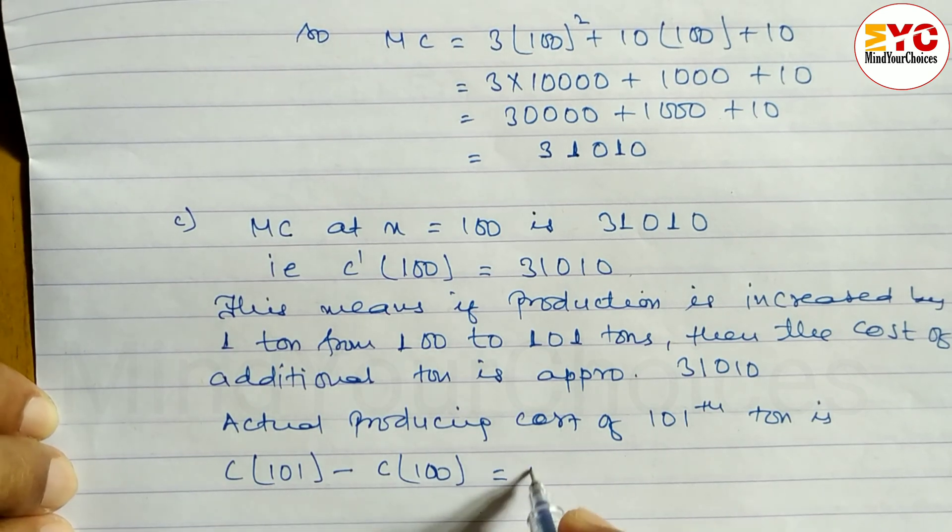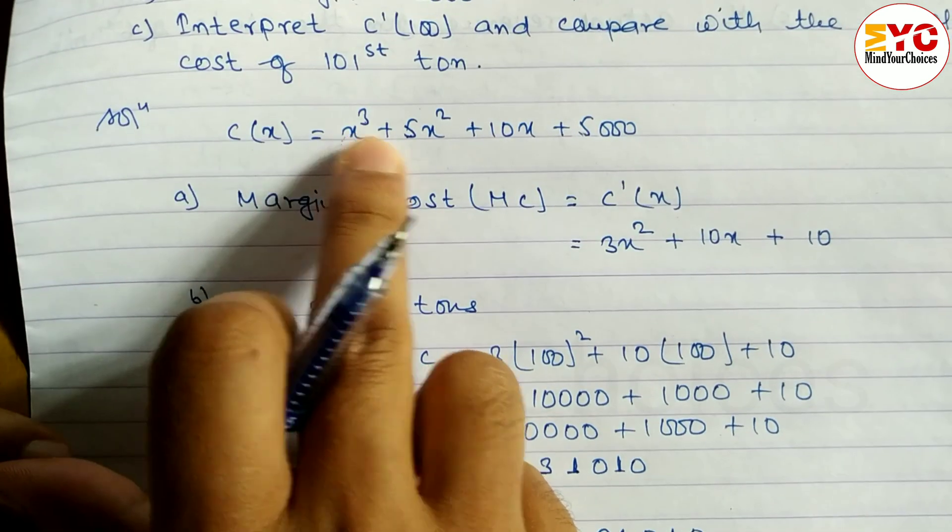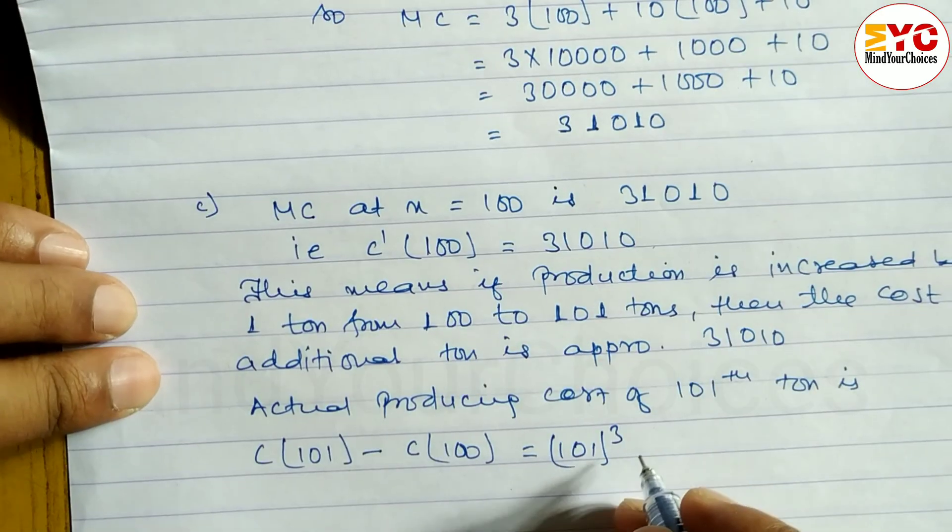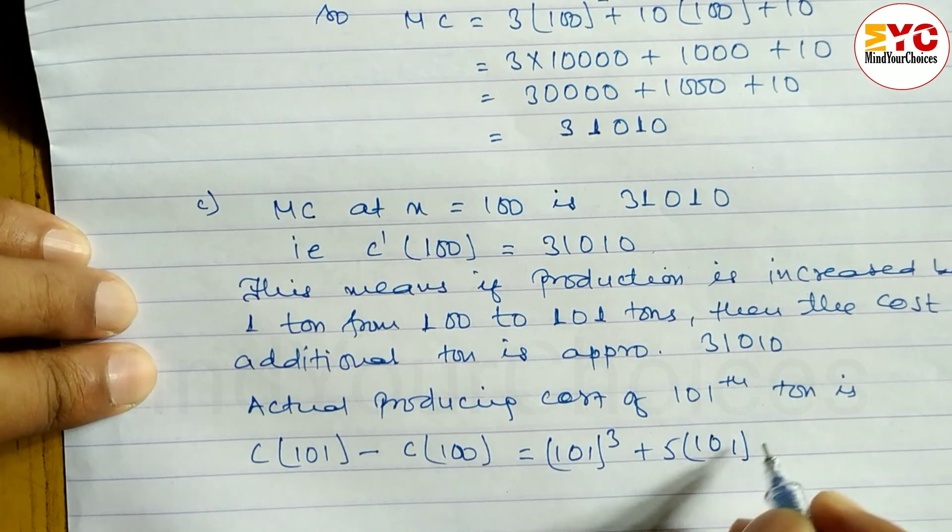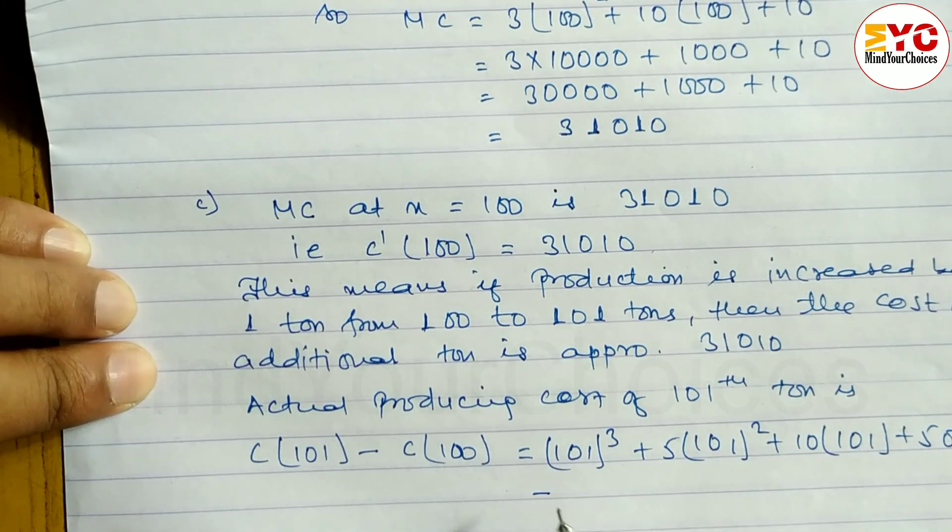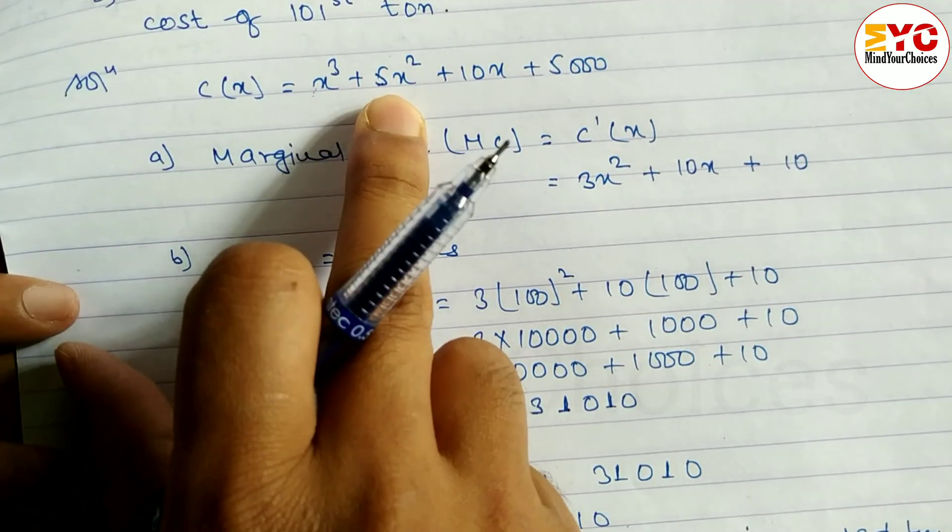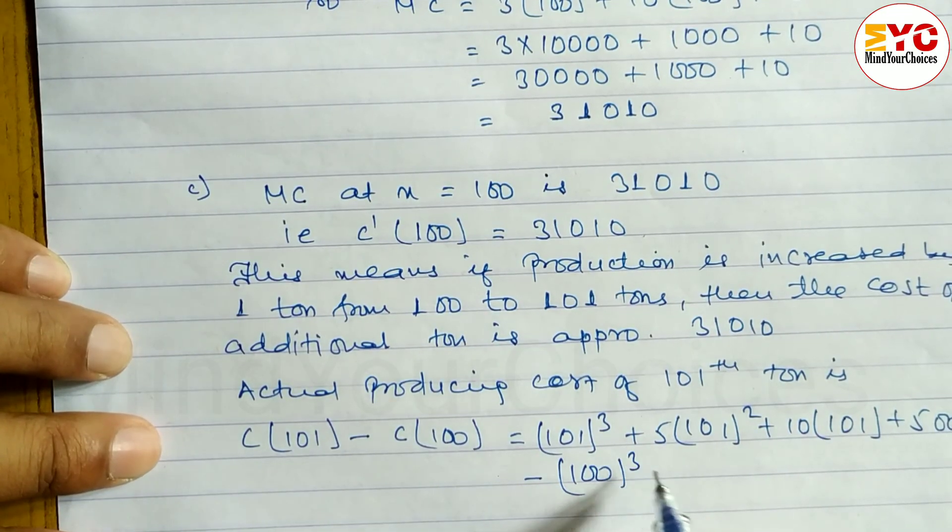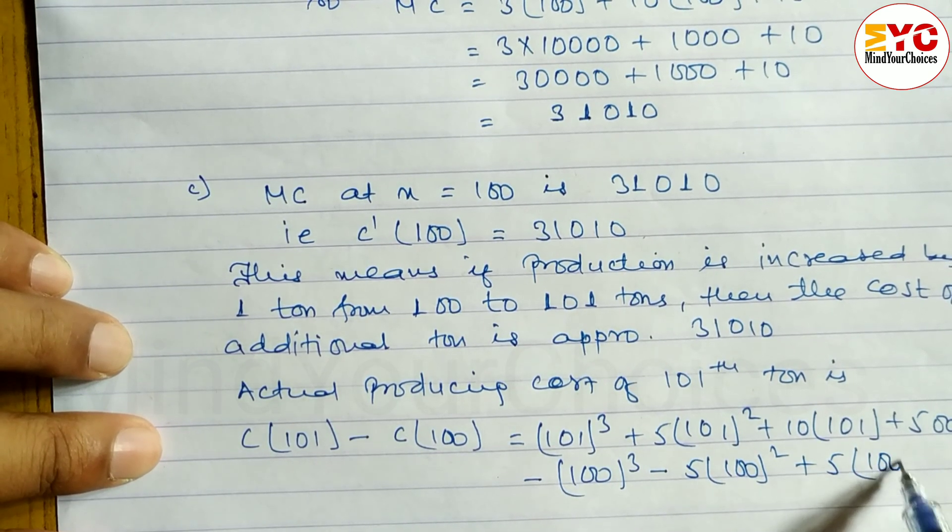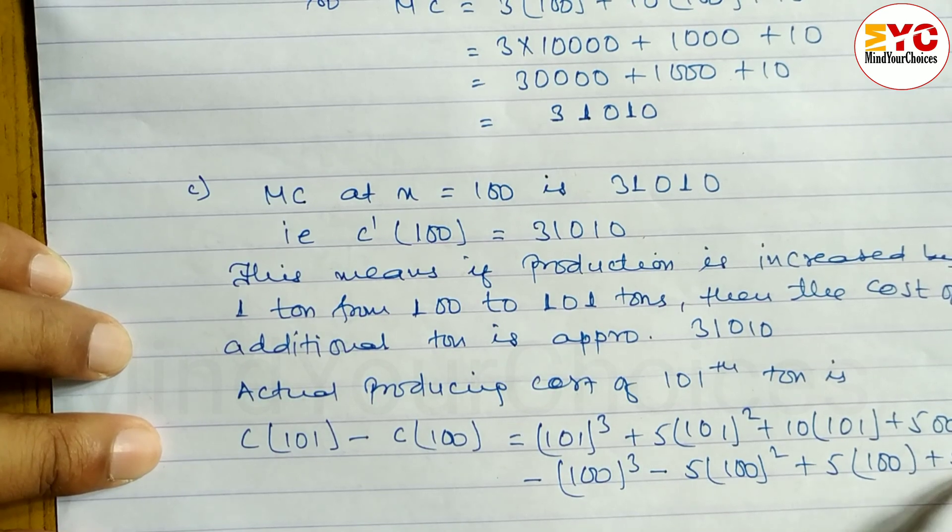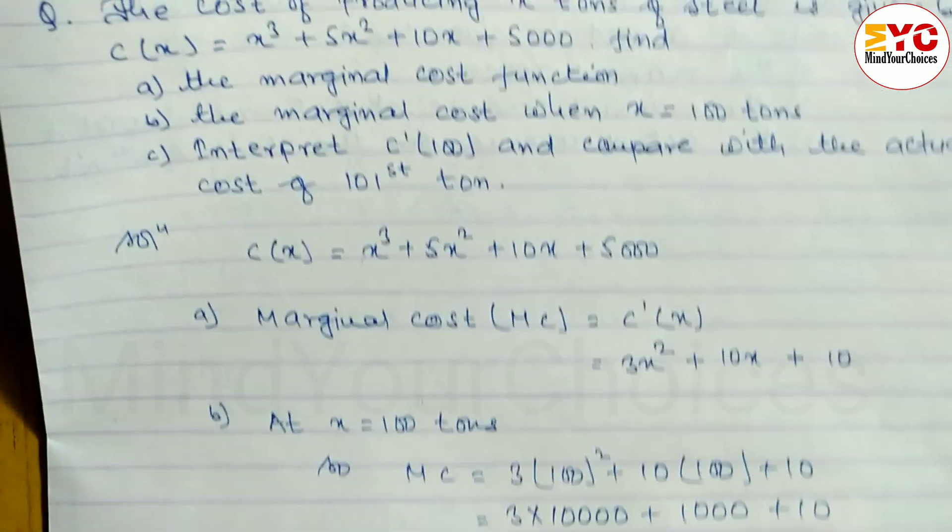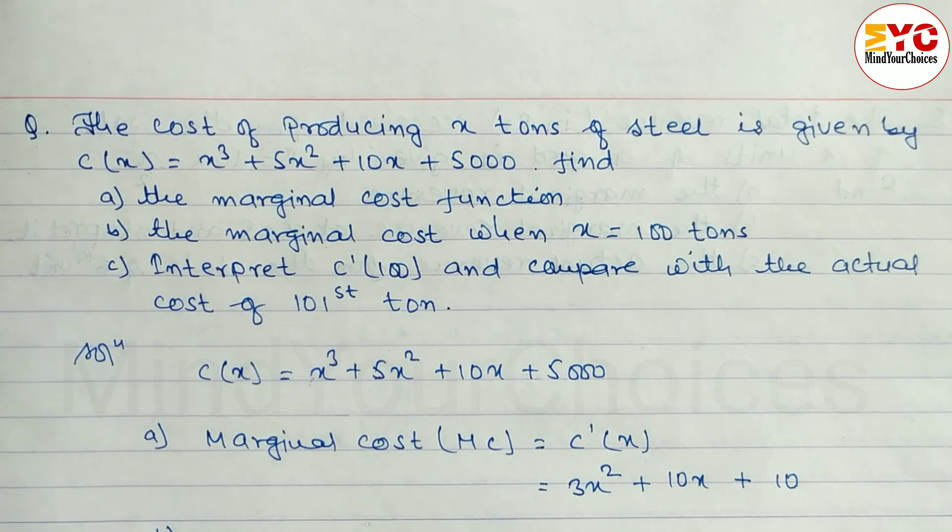We can write 101³ plus 5(101)² plus 10(101) plus 5000 minus [100³ plus 5(100)² plus 10(100) plus 5000]. Just calculate and write down, you will get the answer. Hope you understand this question taken from applications of derivatives.